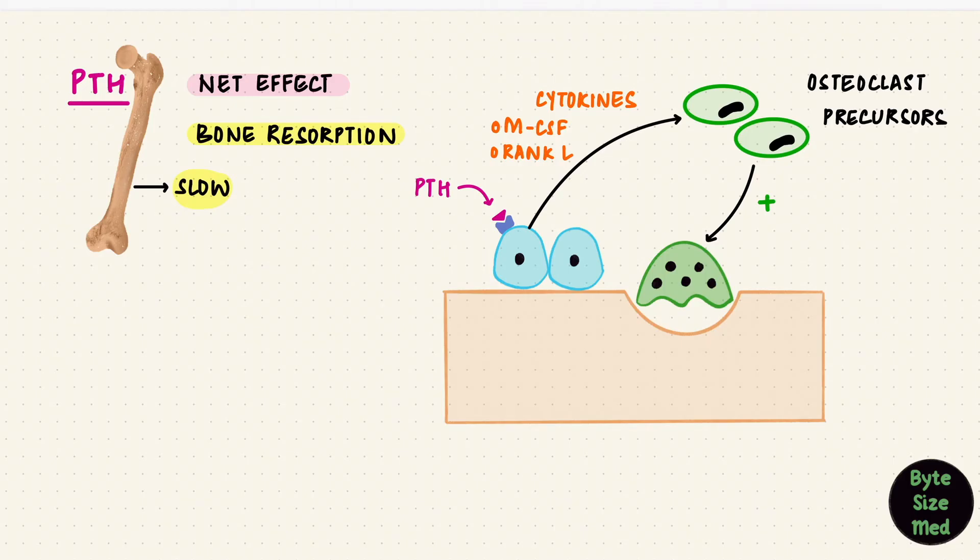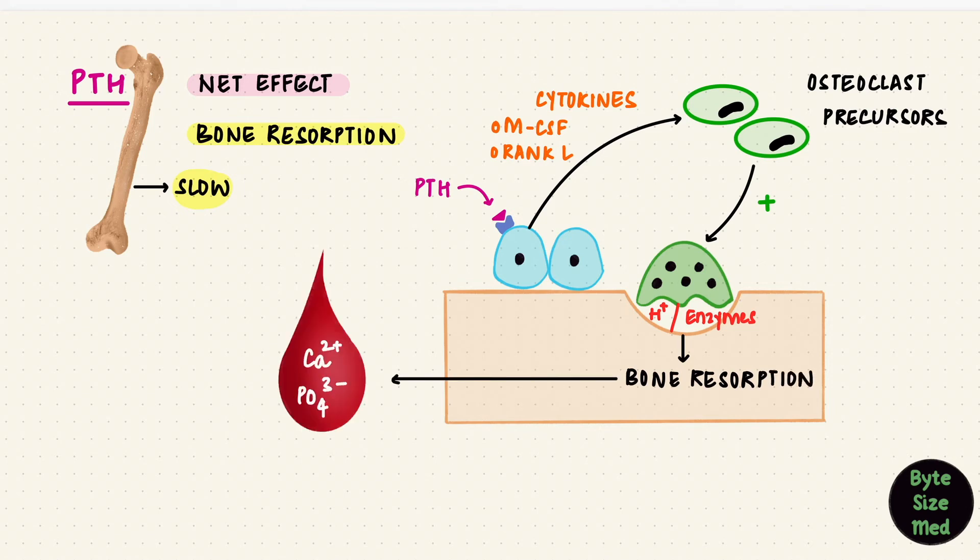These osteoclasts then find a nice cozy spot on bone and start digesting it. They release hydrogen ions and enzymes like acid phosphatases and acid proteases. In this now acidic environment, bone matrix gets broken down, releasing calcium and phosphate into the bloodstream. So when low calcium stimulates the release of PTH, it can cause bone resorption and increase the plasma calcium levels back up to normal again.